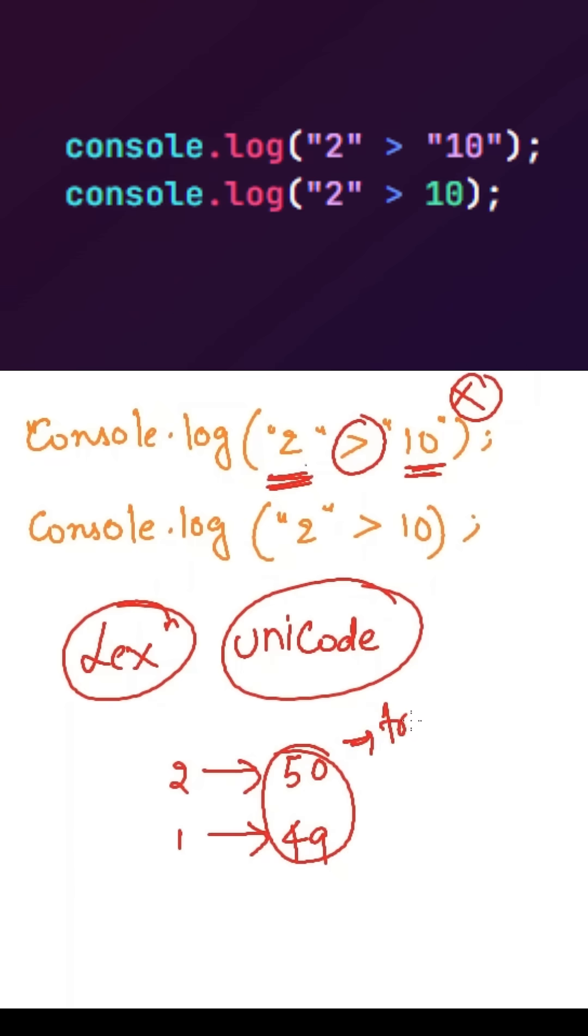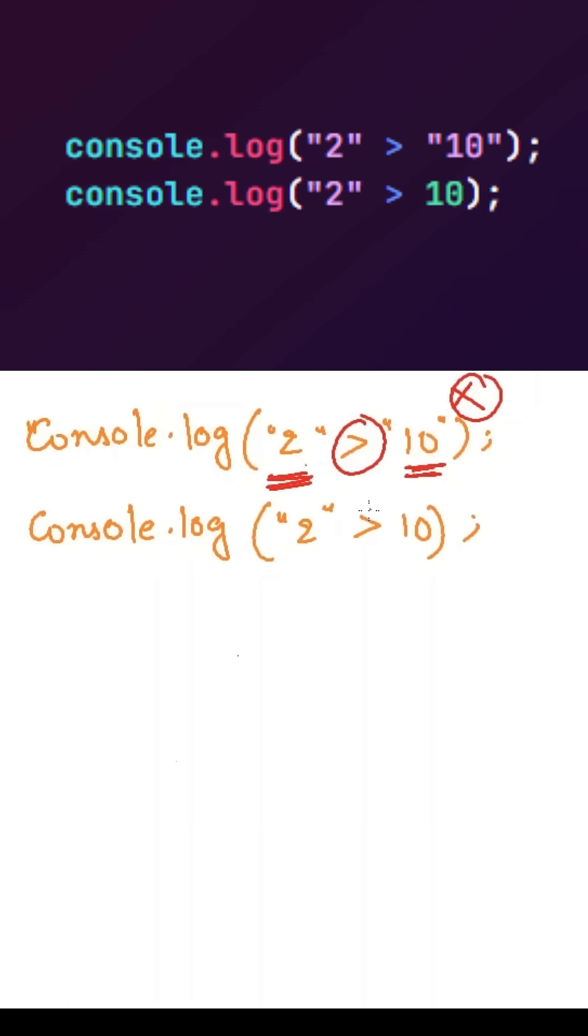In the second line, we are using comparison operator between a string and a number. So, JavaScript engine will convert this string into a number 2. So, our expression will become 2 is greater than 10, which will return false.